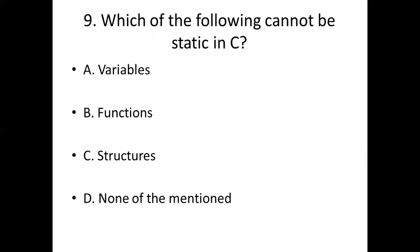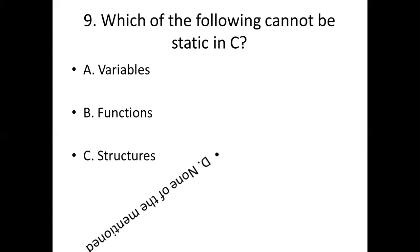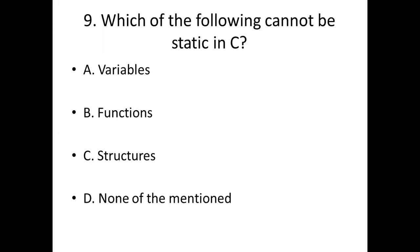Ninth bit. Which of the following cannot be static in C? Option A: variables. Option B: functions. Option C: structures. Option D: none of the mentioned. Answer: Option D, none of the mentioned.